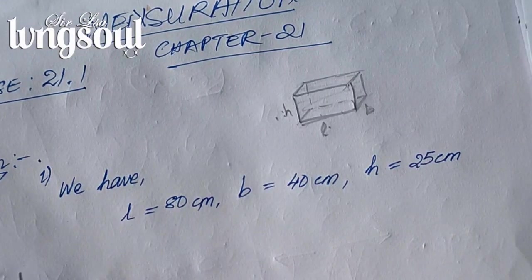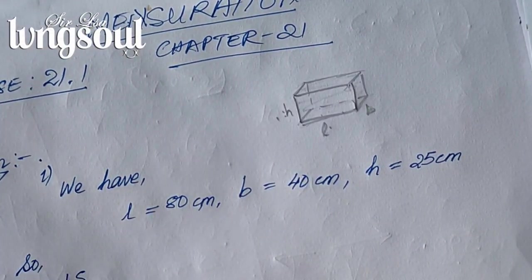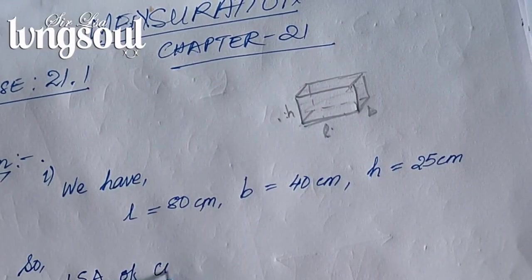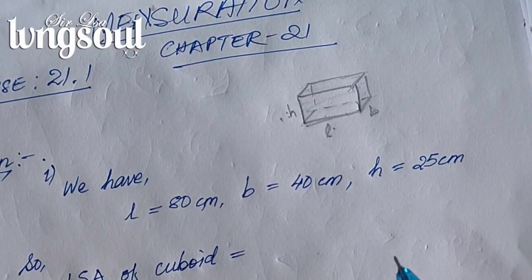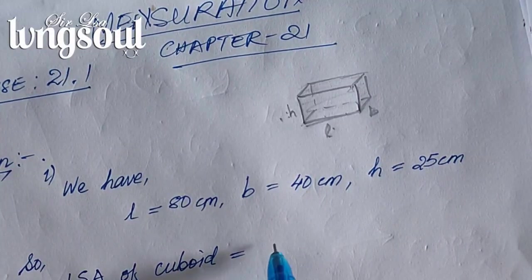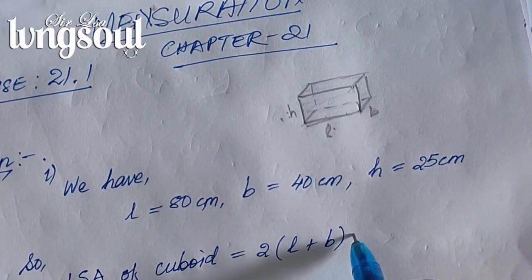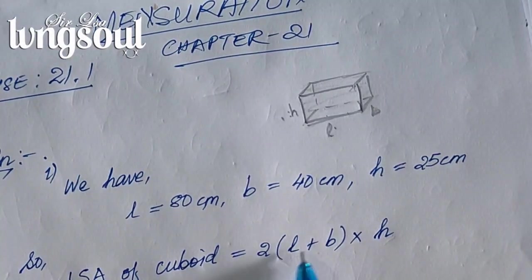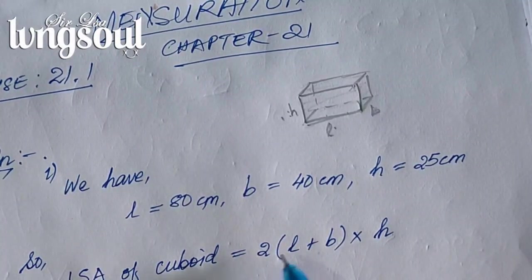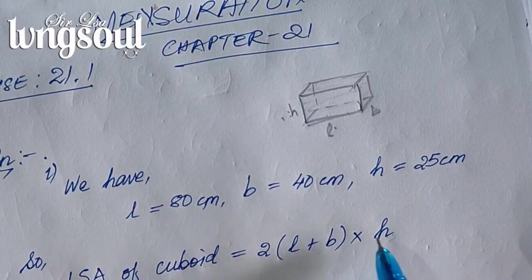The lateral surface area of a cuboid formula is 2 times length plus breadth, multiplied by height. This is also 2 times the perimeter of the rectangle formula, multiplied by height.